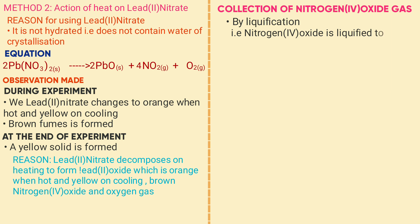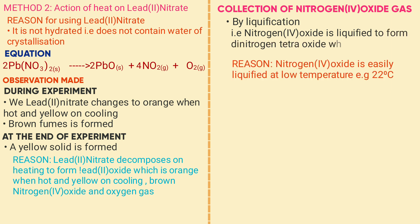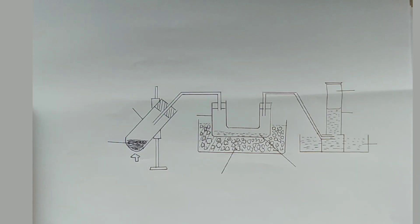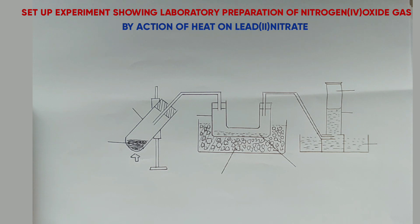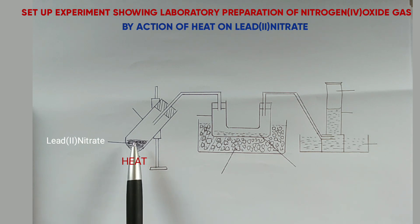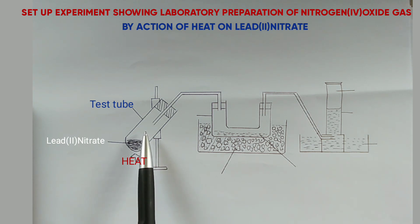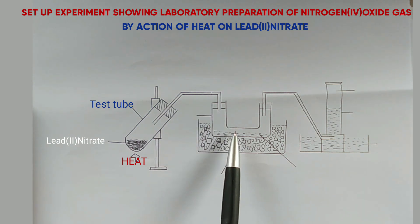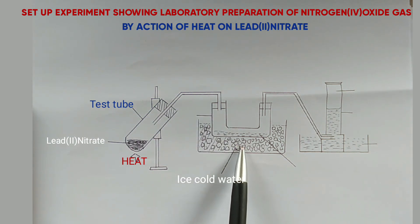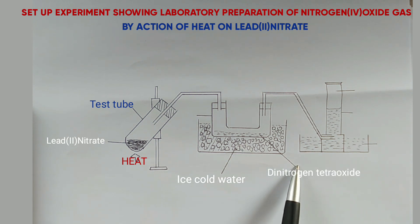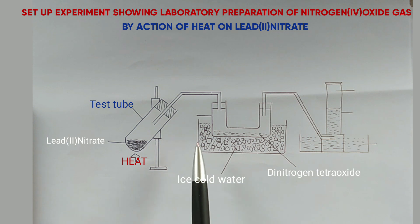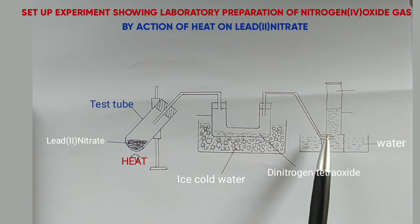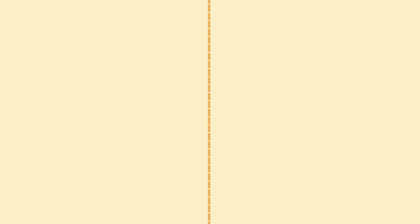The diagram shows preparation of nitrogen dioxide by action of heat on lead nitrate. Lead nitrate is placed in a test tube and heated, forming lead oxide which remains — orange when hot and yellow on cooling. Brown fumes are collected using a tube surrounded by ice-cold water. The role of the ice-cold water is to condense the nitrogen dioxide to form liquid nitrogen tetroxide (N₂O₄), the yellow liquid. Oxygen gas is also collected over water because it is slightly soluble in water.